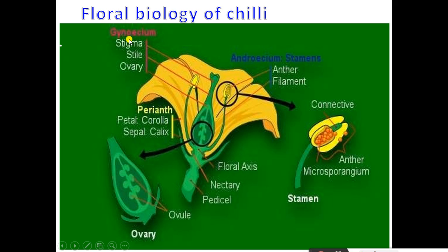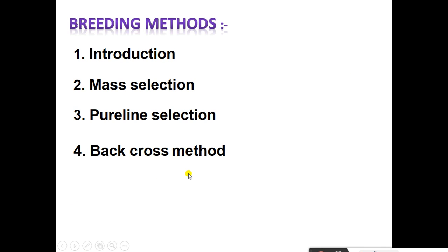Flower biology of chili: see the stigma, style, ovary — that is the gynoecium portion of the chili — then androecium, anther, filament. See the stamens separately: microsporangium, anther and connective. Then flower axis, nectary and pedicel. See the next image: ovule and ovary. Perianth: calyx (corolla) in green color, calyx petals also known as sepals; and corolla petals in yellow color.